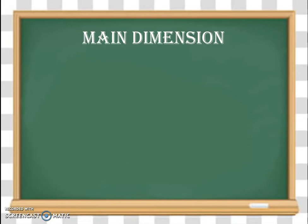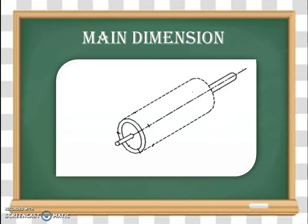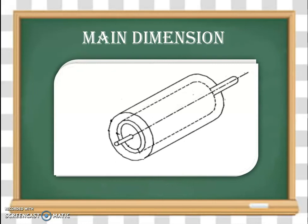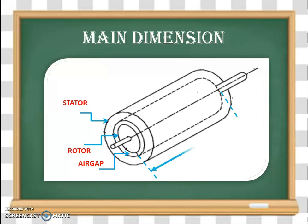We start with the main dimensions. In the case of main dimensions, a stator is shown — stator bore diameter and stator length can be identified. We have the stator and rotor, and in between the stator and rotor we have a small air gap. The stator overall core length is indicated by capital L, and the stator bore diameter — the inner diameter — is known as diameter D, which is the main dimension indicated by capital D.